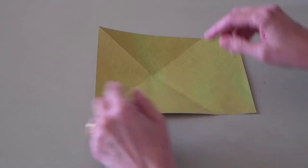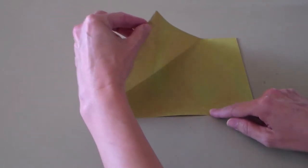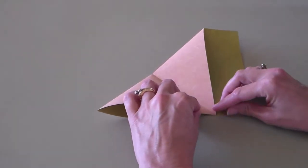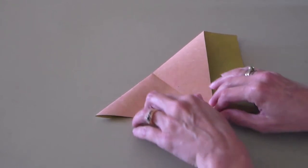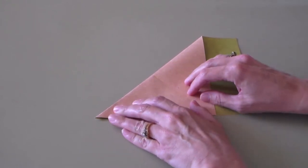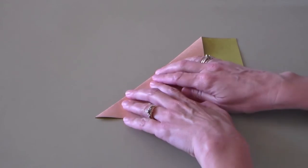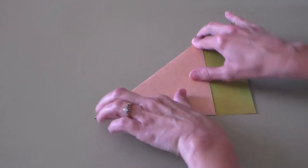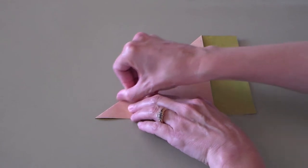Begin by folding the top left corner diagonally to the bottom edge of the paper. Make sure you line it up very carefully before you make the fold. And then once you've got it lined up, crease with your thumbnail or a bone folder if you have one.